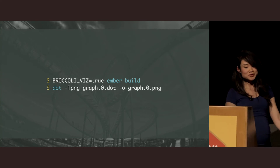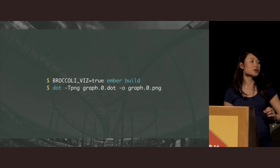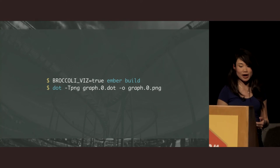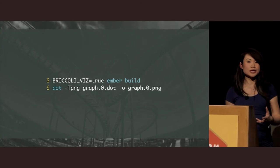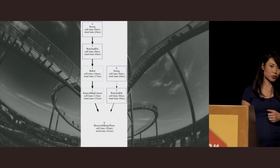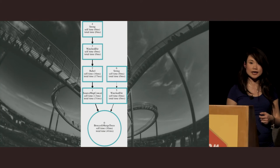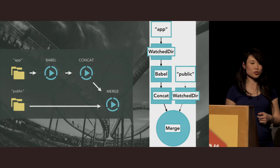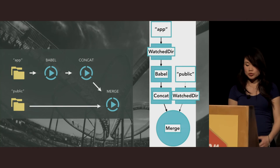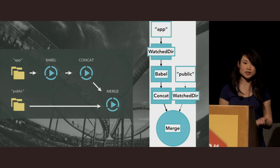If you're curious, you can run ember build with the broccoli-vis flag set to true. That will generate a dot file with information about the actual node graph, which you can convert into an image to get a nice visualization of the build. This is the visualization generated from the simple example we've been seeing. If you annotate it, you can match it up with the diagram shown earlier, except it's flipped vertically.